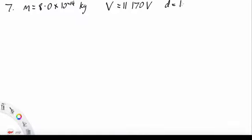And finally, number 7. We're told that the mass of each drop is 8 by 10 to the minus 14 kilos. The voltage was 11,170 volts at a plate separation of 16 millimeters, which is 16 by 10 to the minus 3 meters.